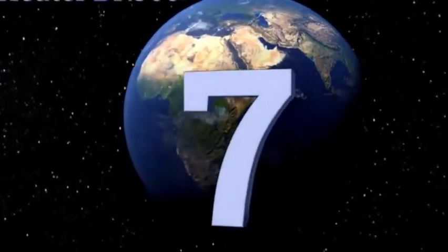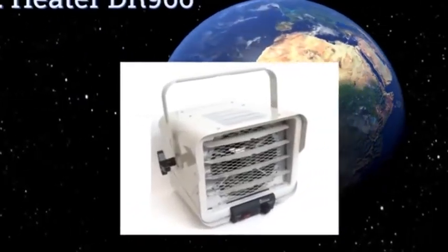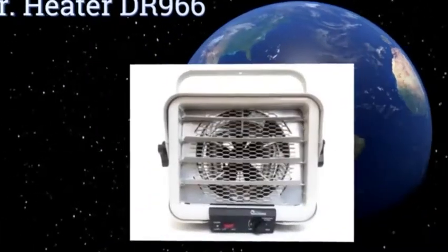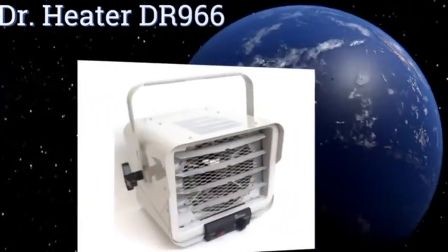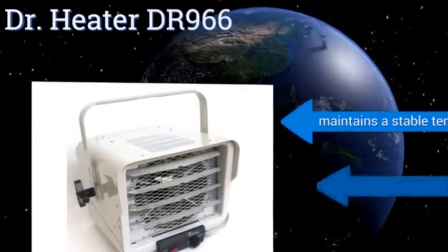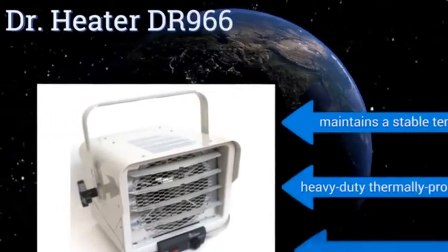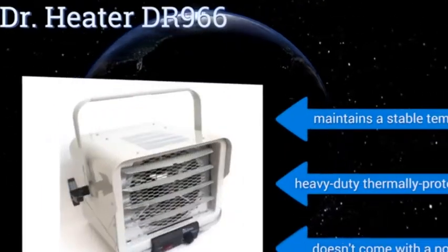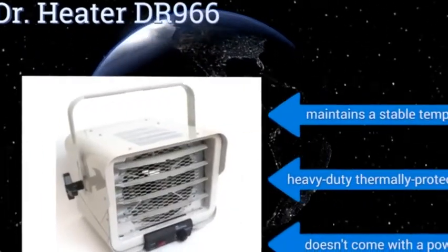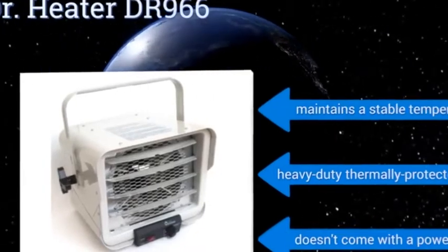At number 7, the five adjustable louvers on the Dr. Heater DR966 enable you to direct the heat exactly where you need it, so none is wasted. The large 8-inch fan is strong enough to send a blast of hot air across your garage, ensuring you're never shivering while you work. It maintains a stable temperature and features a heavy-duty thermally protected motor, but it doesn't come with a power cord.